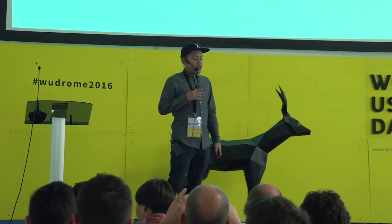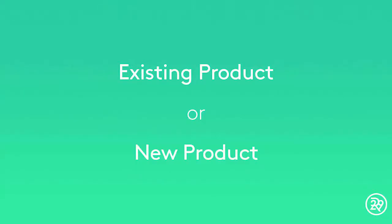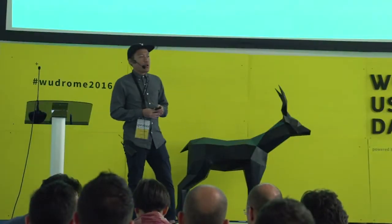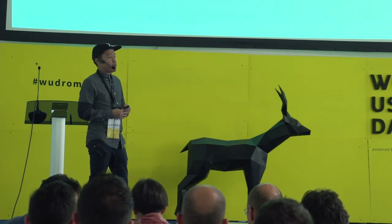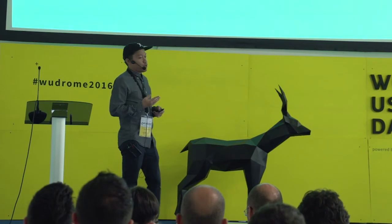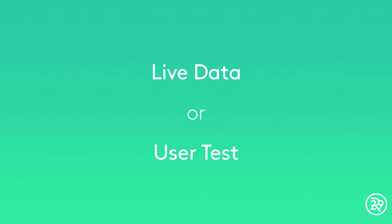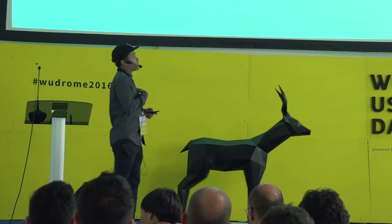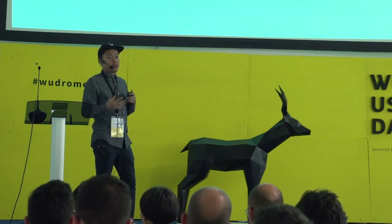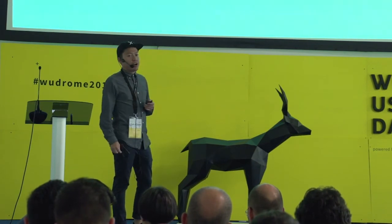Another place we looked for opportunity was through data. You're either in one of two groups: you have an existing product you want to put into app form, or you want to create a brand new product. We had an existing product, so we could look at live data and run tests on our live site to find where the opportunities were with our content for the app. If you're building something brand new, you might want to do user tests and put ideas in users' hands to see what's worth making an app for.